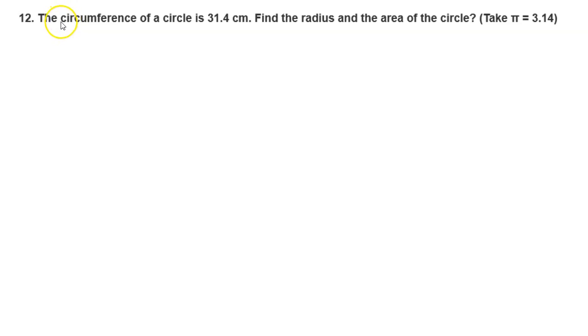Hello to everyone. Welcome back to my channel. Today's question is: the circumference of a circle is 31.4 cm. Find the radius and the area of the circle, and take π = 3.14.